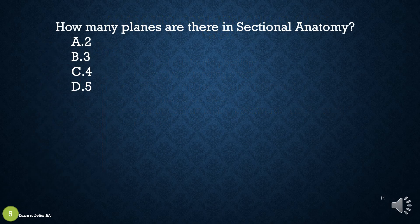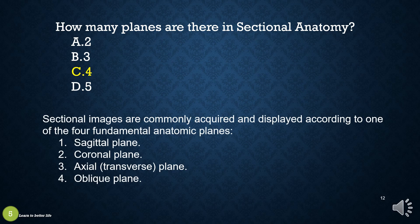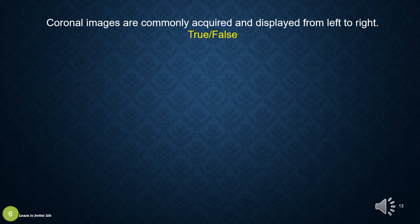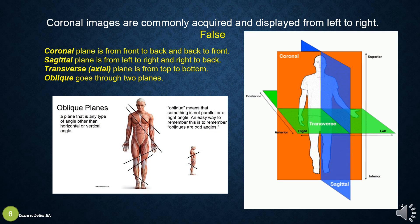How many planes are there in sectional anatomy? 2, 3, 4, or 5? The answer is 4. The axial plane is from top to bottom, and oblique goes through two planes.